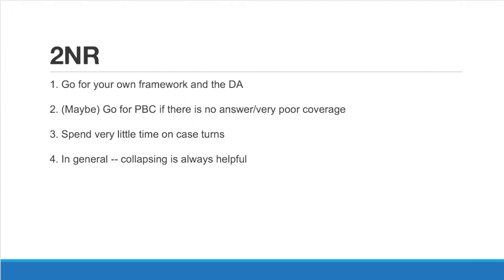You should spend some time on the case answers you've read, but not a very large amount. When I say case answers here, I only mean the arguments against their contention — you should always keep answering their framework justifications throughout your speeches. But the cards indicting their contention should only be a backup in case you are losing the framework debate; they should not be a majority of your last speech by any means. Generally speaking, collapsing is always important and helpful — going in depth on fewer arguments means the judge will have a much clearer understanding because of the greater time you have to explain things.